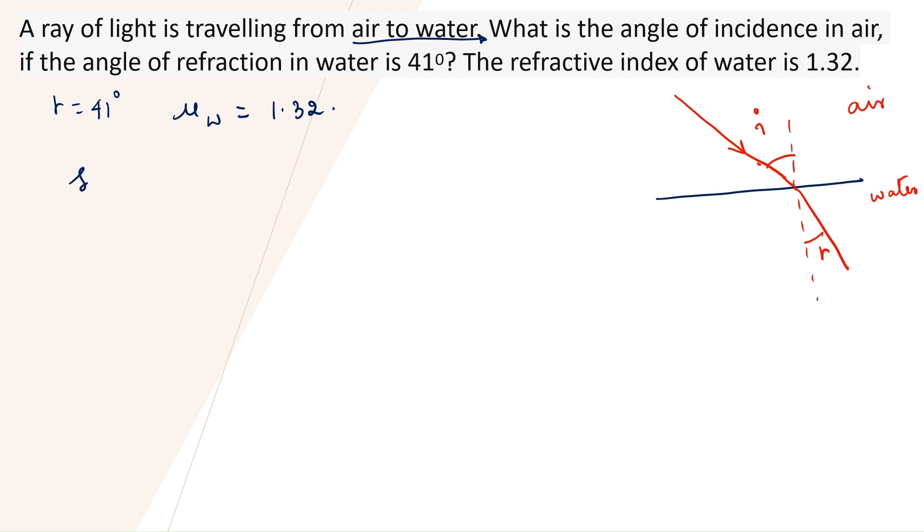We use Snell's law. Snell's law says, sine i by sine r is constant and that constant is equal to refractive index. So, we want angle of incidence. Sine i is equal to mu w into sine r.